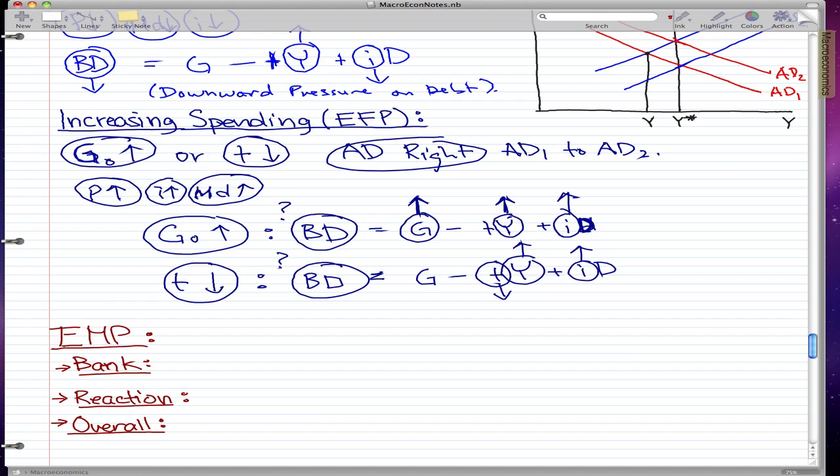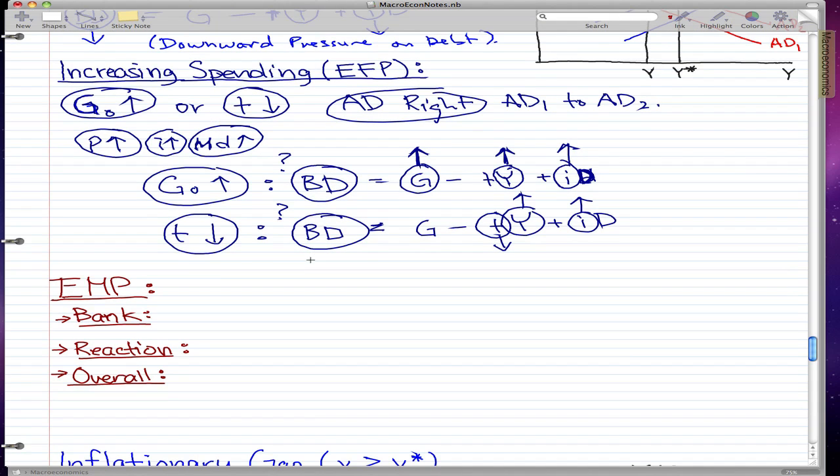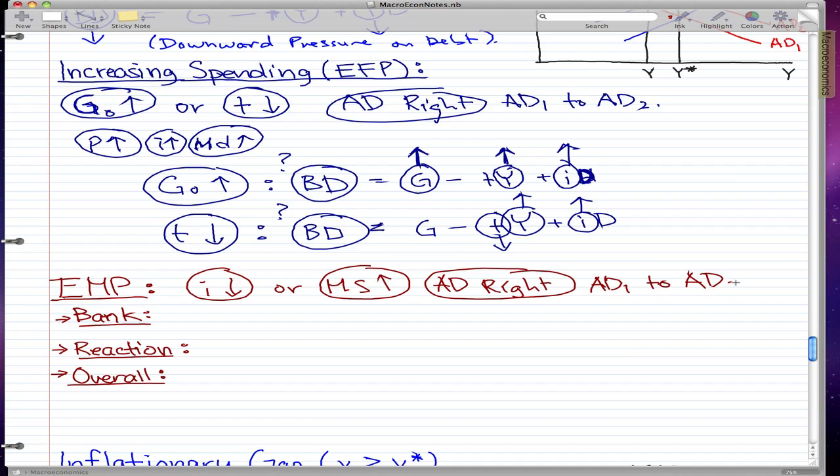Now, the last part of our analysis of the recessionary gap, we're going to do expansionary monetary policy and that is when I falls or MS rises. MS rises. And this takes the same direction for aggregate demand. Aggregate demand moves right to fix the recessionary gap, AD1 to AD2, which I won't draw because we already drew it for the fiscal policy.